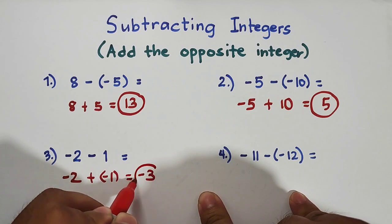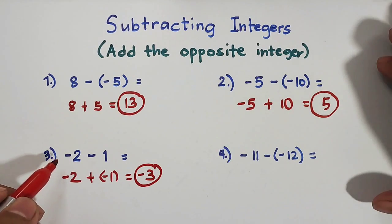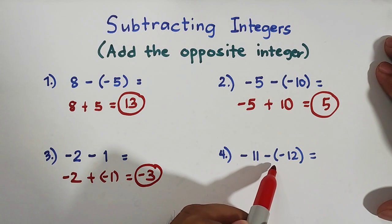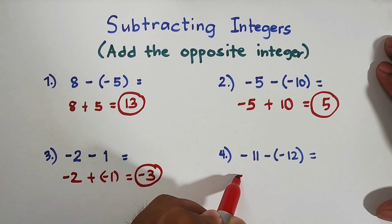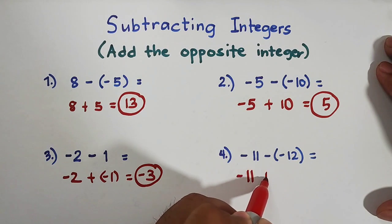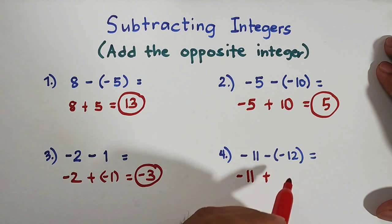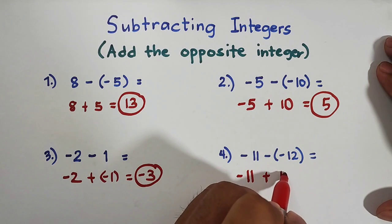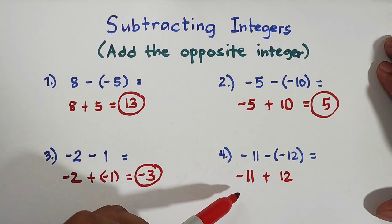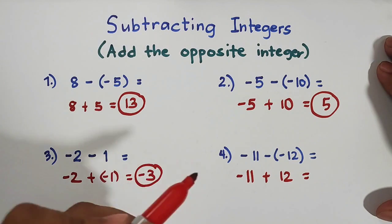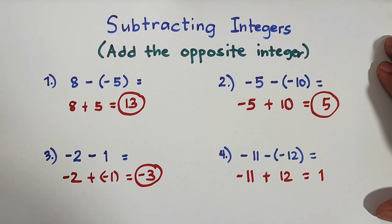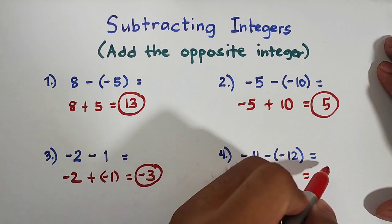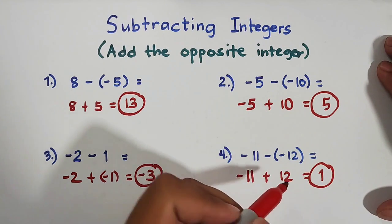In number four, we have negative 11 minus negative 12. Copy negative 11, then add the opposite integer — the opposite of negative 12 is positive 12. So we have negative 11 plus 12. We subtract: 12 minus 11 equals 1. We then decide the sign — it is positive because 12 is positive. So the answer is positive 1.